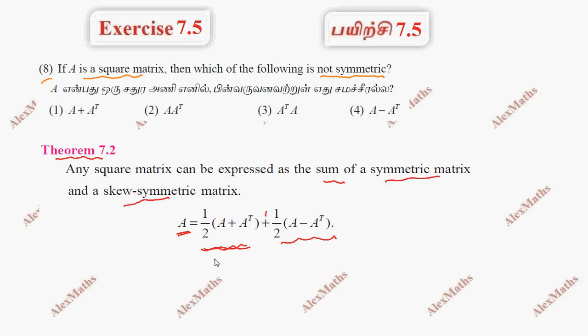The first part is the symmetric part, and the second part is the skew symmetric part. So this is the symmetric, and A minus A transpose is skew symmetric.